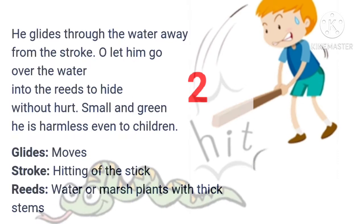He glides through the water away from the stroke, or let him go over the water into the reeds to hide, without hurt, small and green, he is harmless even to children. In this continuation, the poet says the snake moves to the water in order to save itself, and the poet pleads to let it escape and hide behind the thick marshy plants as it is harmless. The small green-colored snake is harmless even to children.